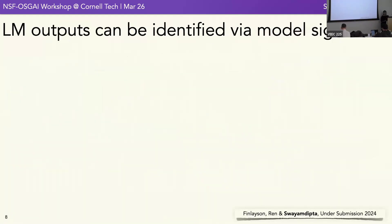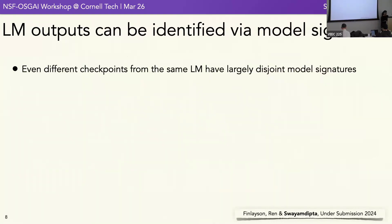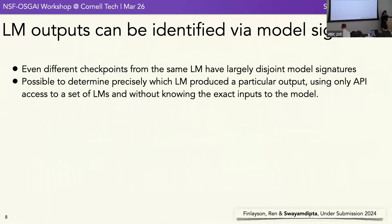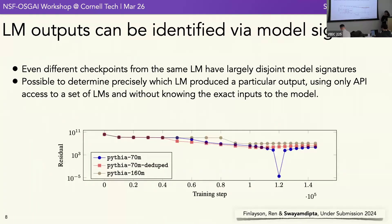You can identify language model outputs just by model signatures. Different checkpoints correspond to different model signatures, so it is possible to precisely determine which checkpoint a model output came from. We demonstrated this for Pythia models, and it would hold for closed source models too.